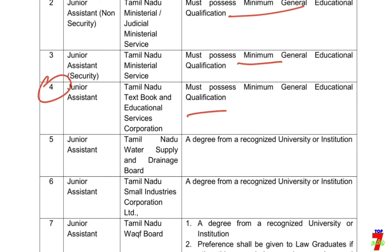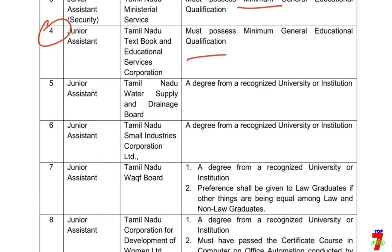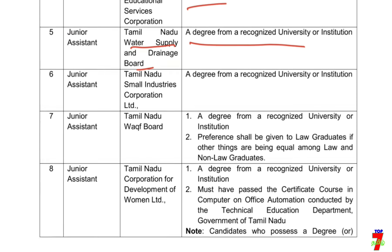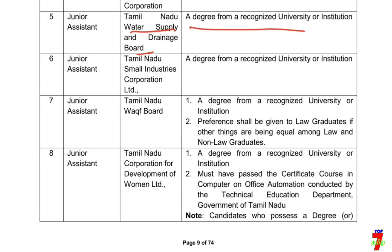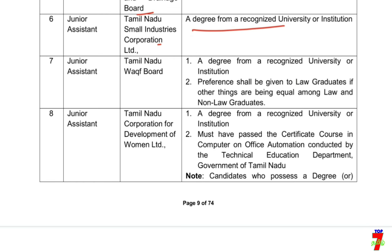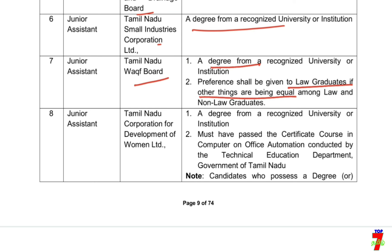The 4th is 10th, and the next step is 5th. The junior assistant includes Tamil Nadu Water Supply and Drainage Board, Tamil Nadu Small Industries Corporation, and Tamil Nadu Walk Board.